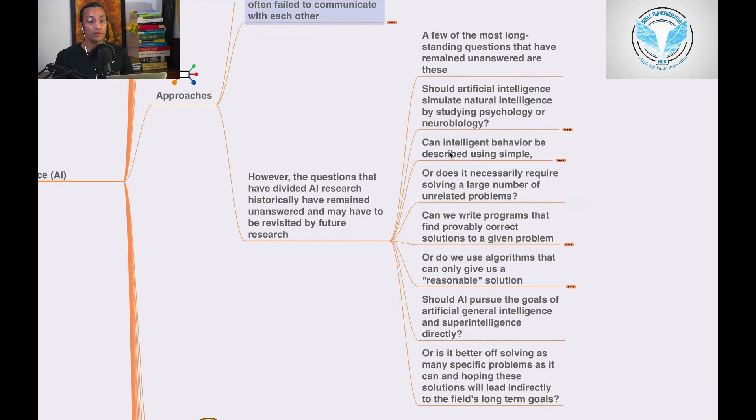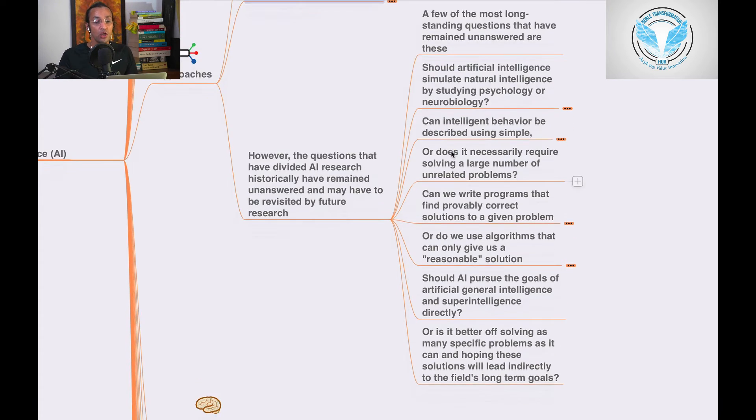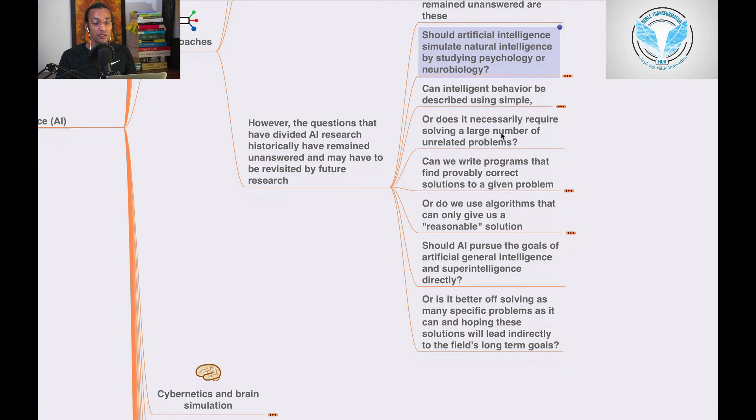A few of the most long-standing questions that have remained unanswered are these: Should artificial intelligence simulate natural intelligence by studying psychology or neurology, or is human biology as irrelevant to AI research as bird biology is to aeronautical engineering? These are the challenges and questions which we need to question and research.